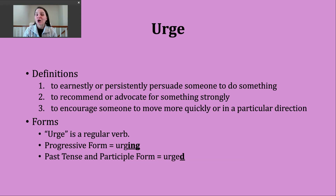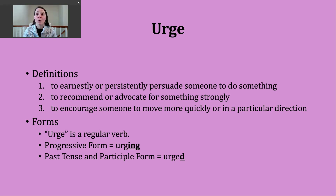You should know that urge is a regular verb. To make the progressive form, you're going to drop the e and then add -ing to form urging. The past tense and participle forms of this verb are made by just adding -d, since this verb already ends in an e. Our base verb, urge, ends in a voiced j sound. So our past tense ending is going to make a d sound: urged.